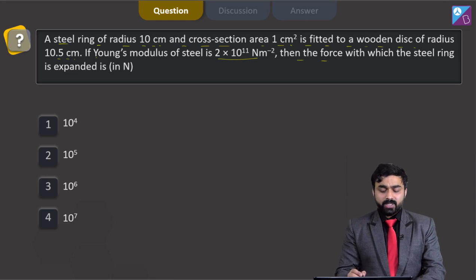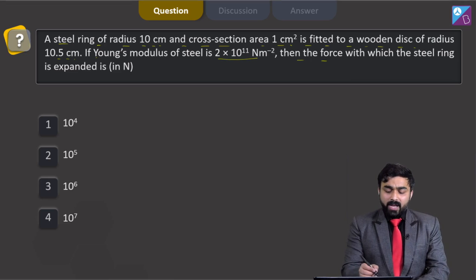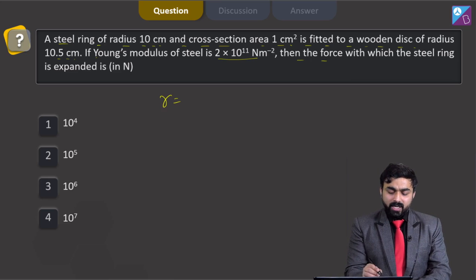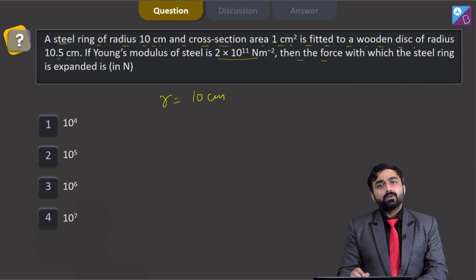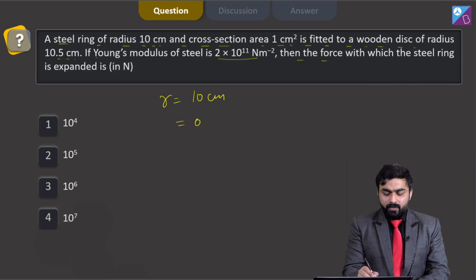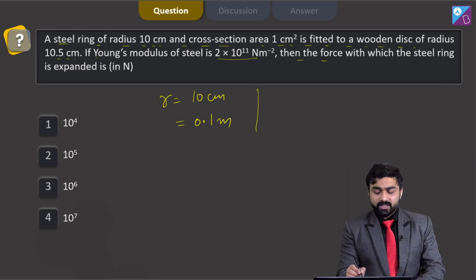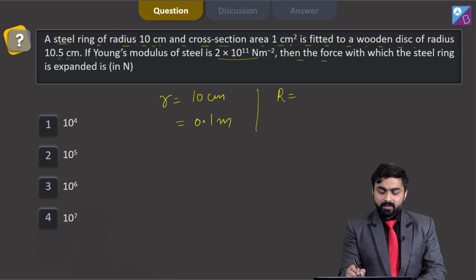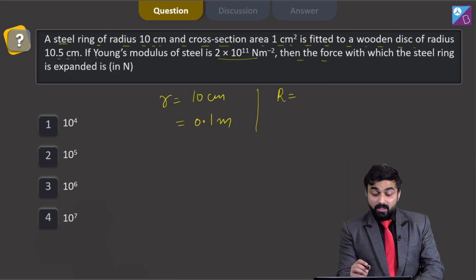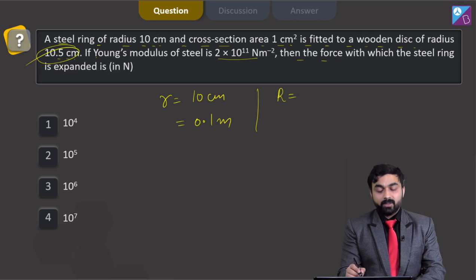Now, expansion is taking place. We are trying to fit a ring into a disc. Initially, the radius of the ring was 10 centimeter, which I can write 0.1 meter. And finally, the radius of the wooden disc is given to me or the ring is taking the shape of the disc finally. Therefore, the radius of the ring will finally be 10.5 centimeter.